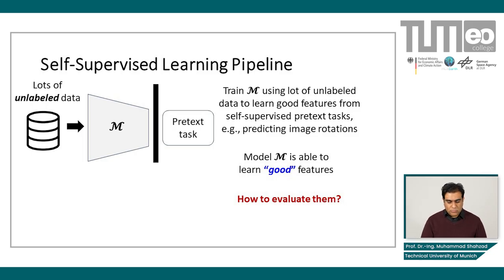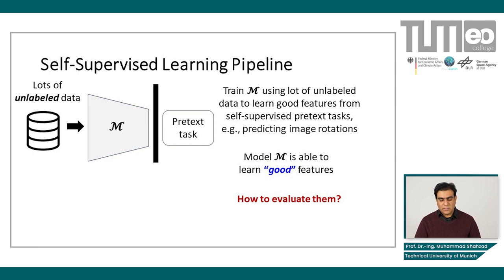For repetition, I have made this slide again. So we have lots of labeled data, we have this model M — a machine learning model — and then we have a pretext task which we have set, for example image rotation. We use pseudo-labels generated from this pretext task and train M again and again iteratively. And after a few iterations or epochs, this M is able to learn good features.